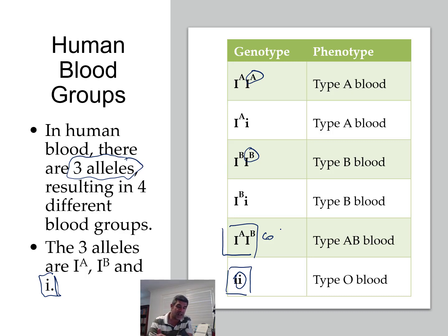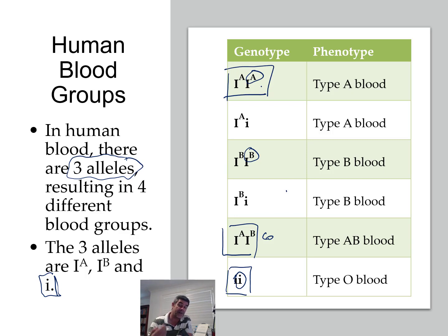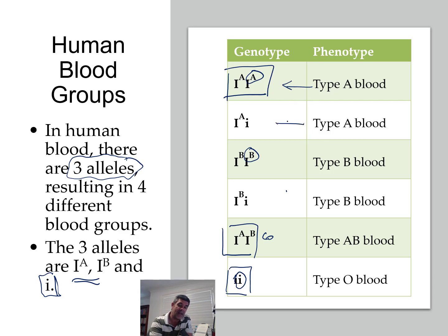For now we're looking at the relationship between genotype and phenotype and how we inherit blood type. Despite the fact that there are three different alleles which could be inherited, any individual only has two. Two A's give you type A blood; A with O gives you type A blood; two B's give you type B; B with O gives you type B; A and B together give you type AB; and both recessive O alleles give you type O blood.